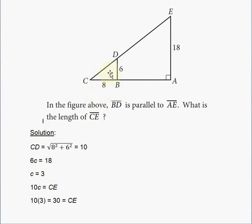So 10 times the same constant, C, will give you CE. So now 10 times C is equal to CE, and you know that the constant is 3. So 10 times 3 is 30. Bingo! CE is equal to 30.